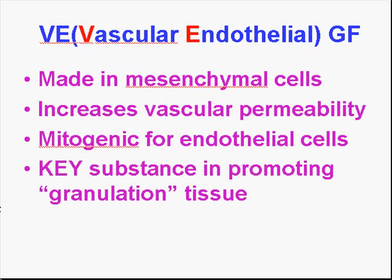Here is probably the single most important growth factor: vascular endothelial growth factor. The 'VE' stands for the cell that it is targeting, rather than where it's made. It's made by general mesenchymal cells, and it has as its target other types of mesenchymal cells called endothelial cell precursors — the key substance in showing the granulation tissue or in-growth of new blood vessels following inflammation and in the process we call healing.